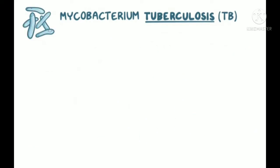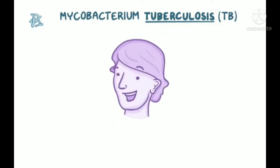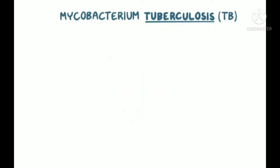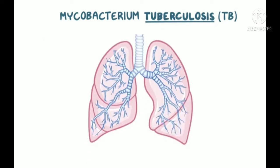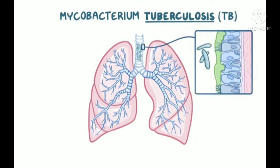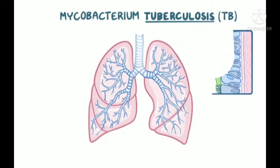Mycobacterium tuberculosis is usually transmitted via inhalation, which is how it gains entry into the lungs. We breathe in all sorts of viruses and bacteria all the time, but we have defenses that take care of most of them. Air that we breathe in is turbulent in the upper airways and drives most bacteria against mucus, which is then cleared pretty quickly.